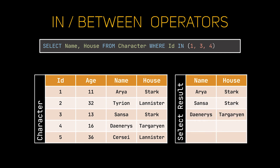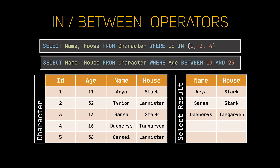The WHERE clause can also be used with the IN or BETWEEN keywords. The IN keyword allows us to select specific records where a certain column value is in a set of other values — it acts kind of like several equals chained along with the OR operator. On the other hand, the BETWEEN keyword allows us to specify a range of numbers in our WHERE clause. In our case, we are selecting the name and house of the characters aged between 10 and 25 years old.